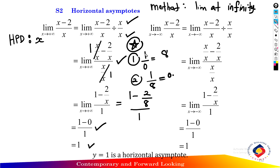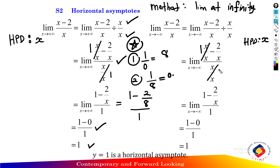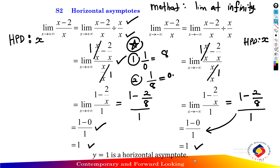Note: 1 over 0 equals infinity and 1 over infinity equals 0. For the second limit, as x approaches negative infinity of x minus 2 over x: find the highest degree of the denominator, which is x. Dividing by x and substituting gives 2 over infinity equals 0, so 1 minus 0 over 1 equals 1. Therefore the limit as x approaches negative infinity of x minus 2 over x equals 1. So y equals 1 is a horizontal asymptote of the function.